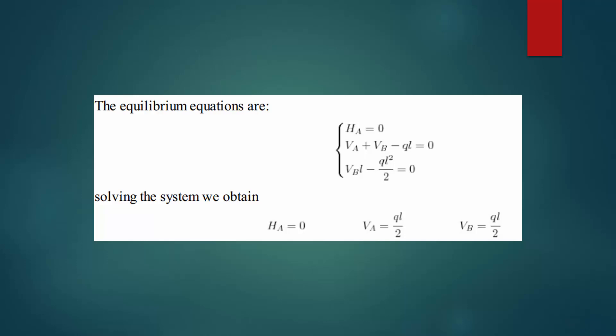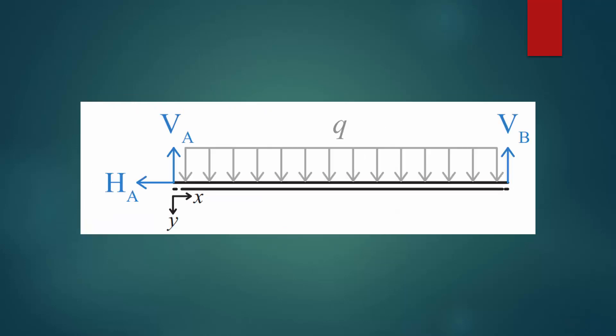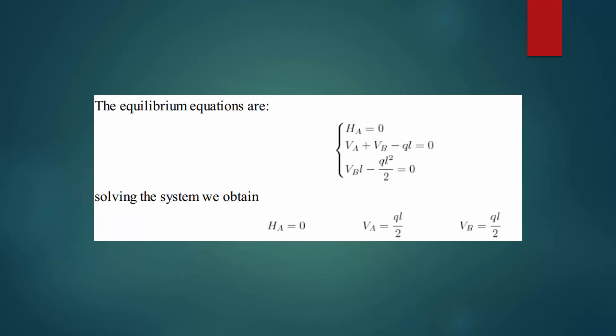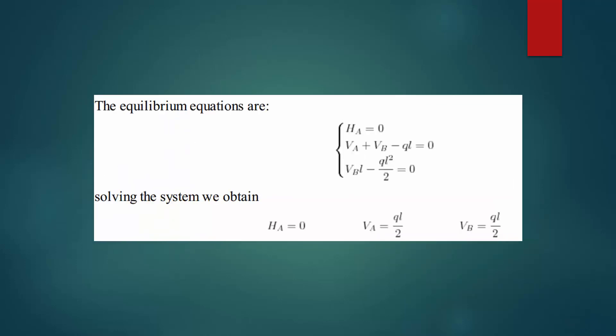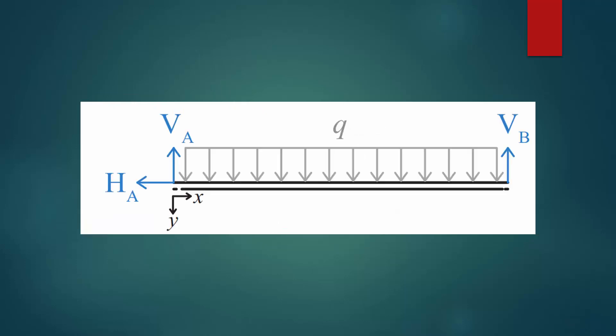Our equilibrium equations are: HA equals 0, VA plus VB minus Q times length L equals 0, and the moment equation VB times L minus Q*L squared by 2 equals 0. Solving these, we get HA equals 0, VA equals QL/2, and VB equals QL/2.